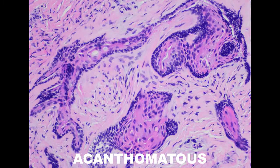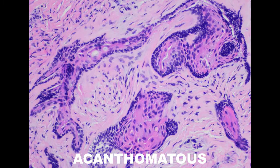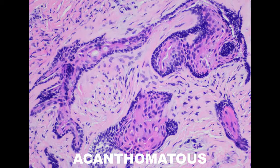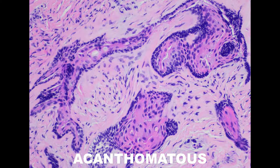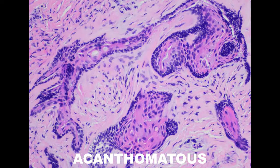The acanthomatous pattern is less common and occurs when we see squamous metaplasia between the ameloblast-like cells exhibiting reverse polarity. In place of the spiderweb-looking stellate reticulum, you see squamous pearls or squamatization. It's important to note this can be confused for squamous cell carcinoma, but the acanthomatous ameloblastoma acts no differently from the other subtypes — there's no increase in aggression or malignant transformation. It's not uncommon to see an ameloblastoma with several different subtypes mixed together.